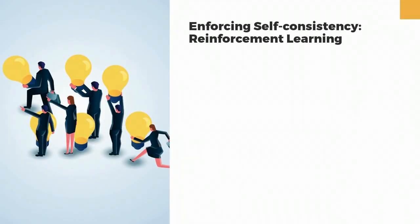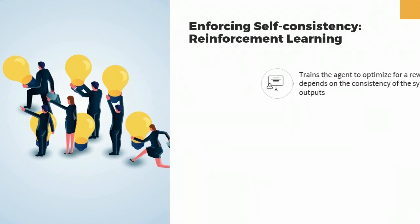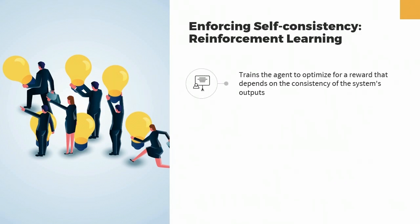Reinforcement learning is a type of machine learning that uses an algorithm or AI system called an agent, which learns to make decisions based on trial and error, receiving feedback in the form of rewards or punishments for each action taken. Reinforcement learning can be used to enforce self-consistency by training the agent to optimize for a reward that depends on the consistency of the system's outputs. The agent is rewarded when the outputs are consistent and penalized when they are not.